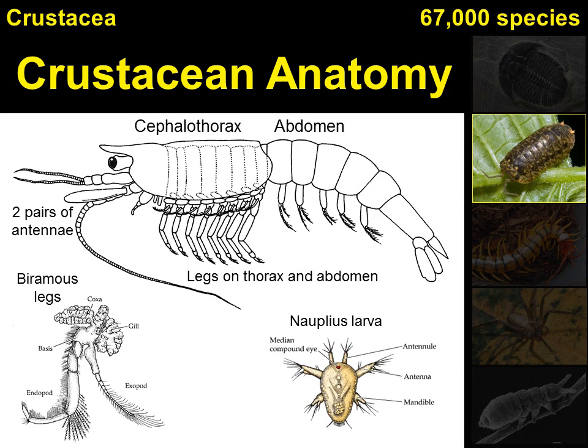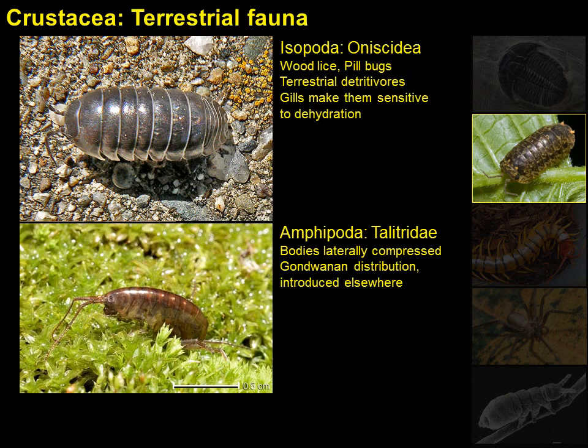These two tagma are the cephalothorax and the abdomen. Variable numbers of legs arise from the cephalothorax, and additional legs are usually found on the abdomen as well. The legs are generally biramous, meaning they have two branches. Most crustaceans have compound eyes and two pairs of antennae. Most crustaceans also have a planktonic juvenile stage known as the nauplius larvae, featuring three pairs of appendages that develop ontologically into the two pairs of antennae and the mandible, and also a single median compound eye.